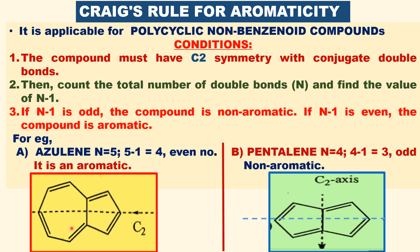The ring is not benzenoid. This is not a benzenoid ring. What are the conditions? The compound must have a C2 axis of symmetry. For azulene, this is the C2 axis of symmetry. For pentalene, this is the C2 axis of symmetry, and also here.